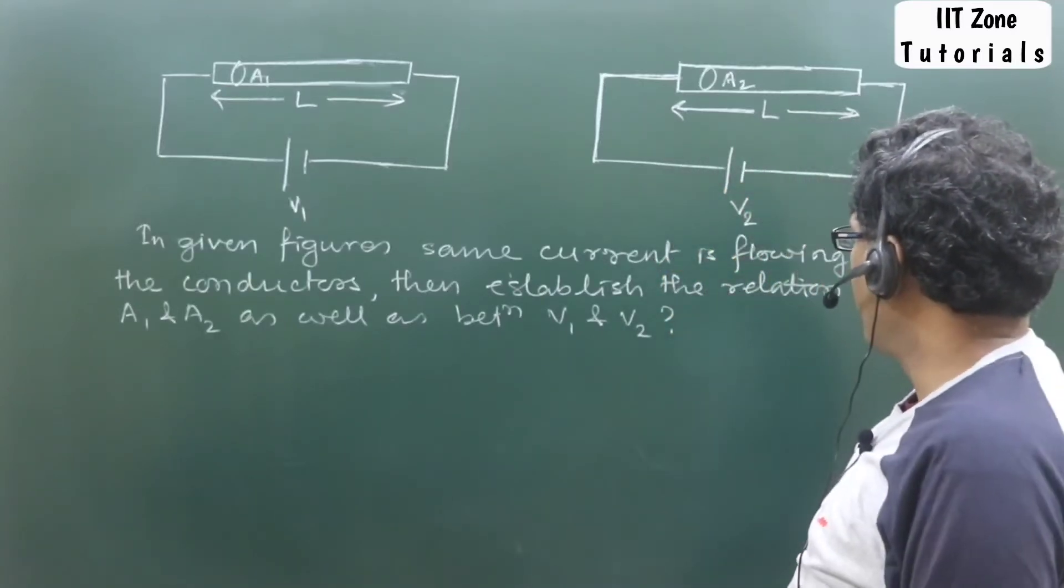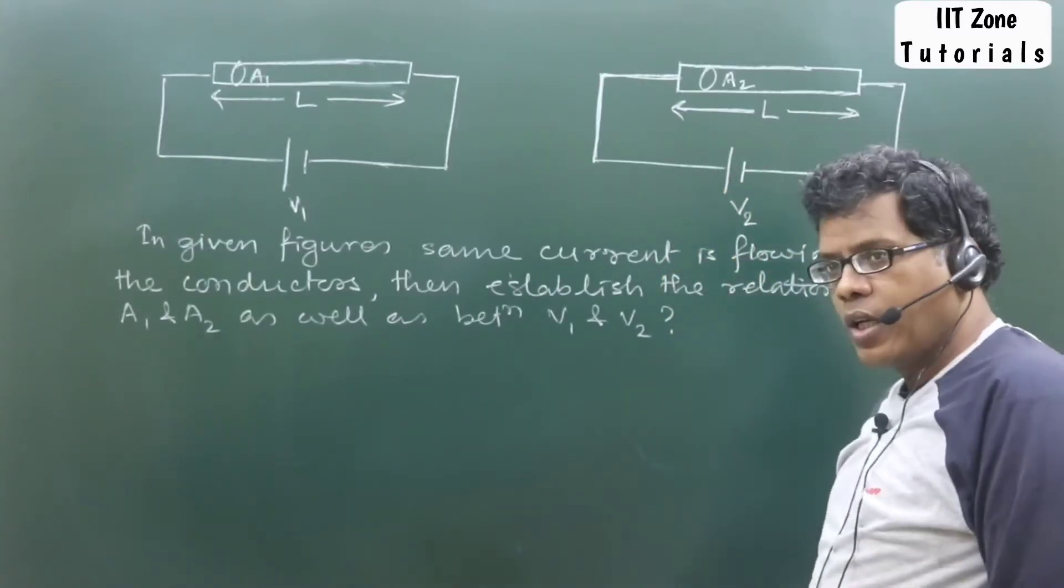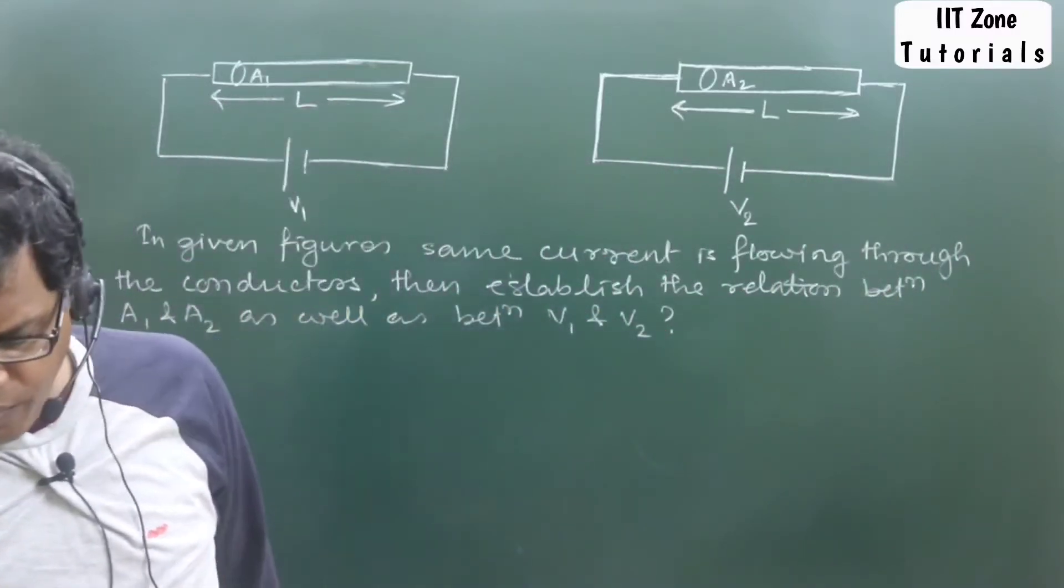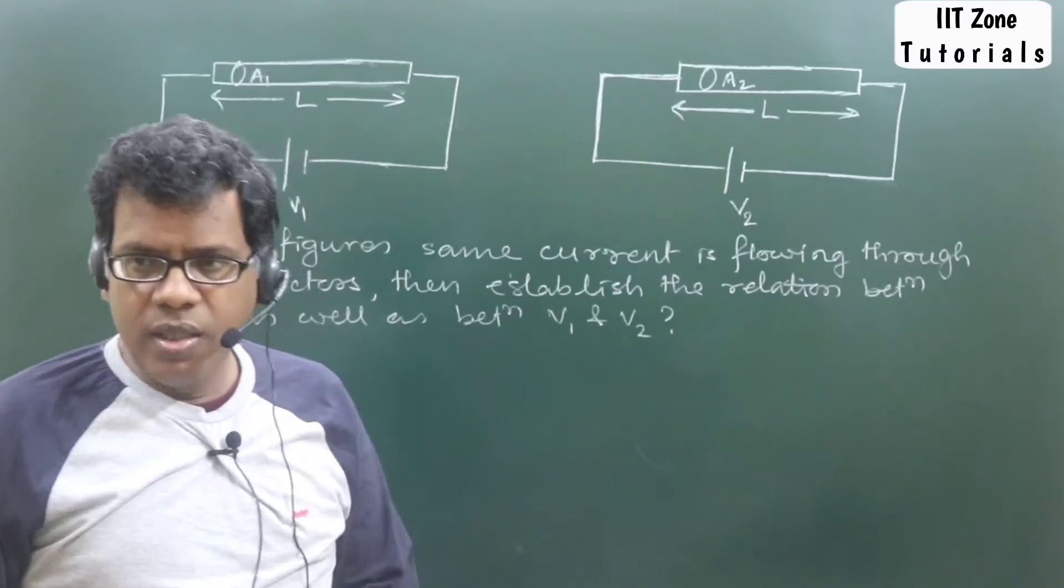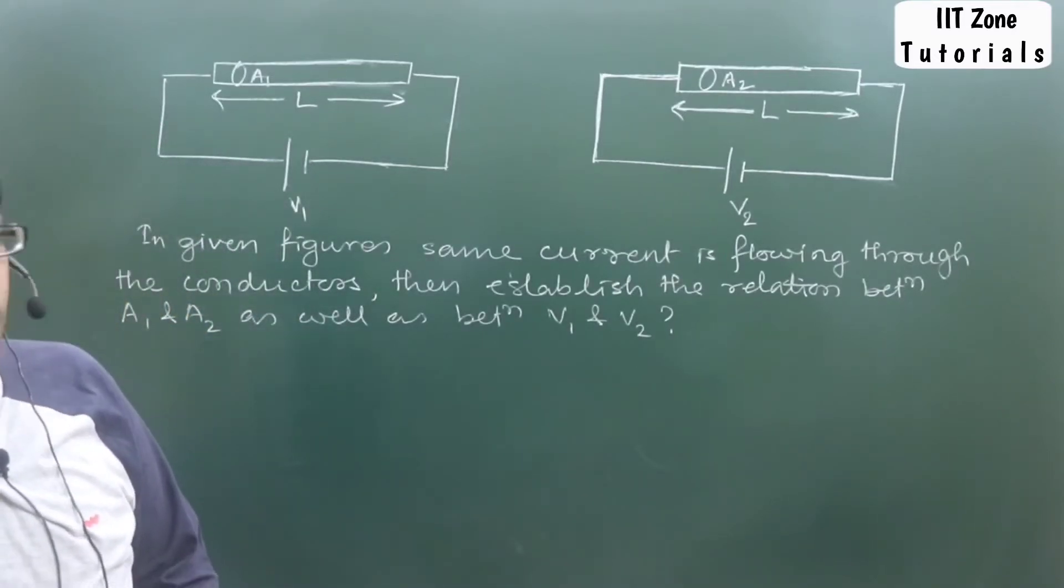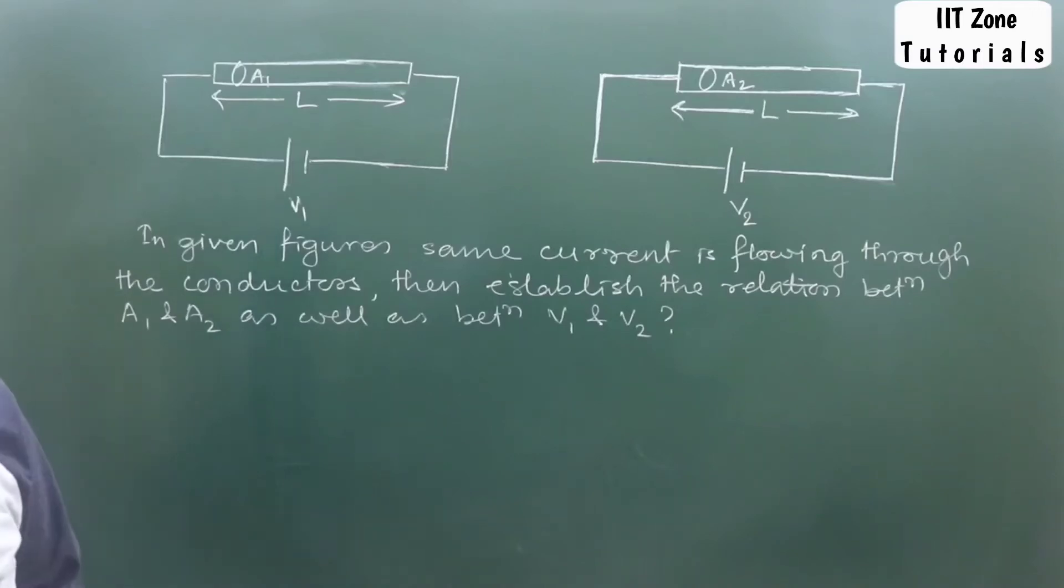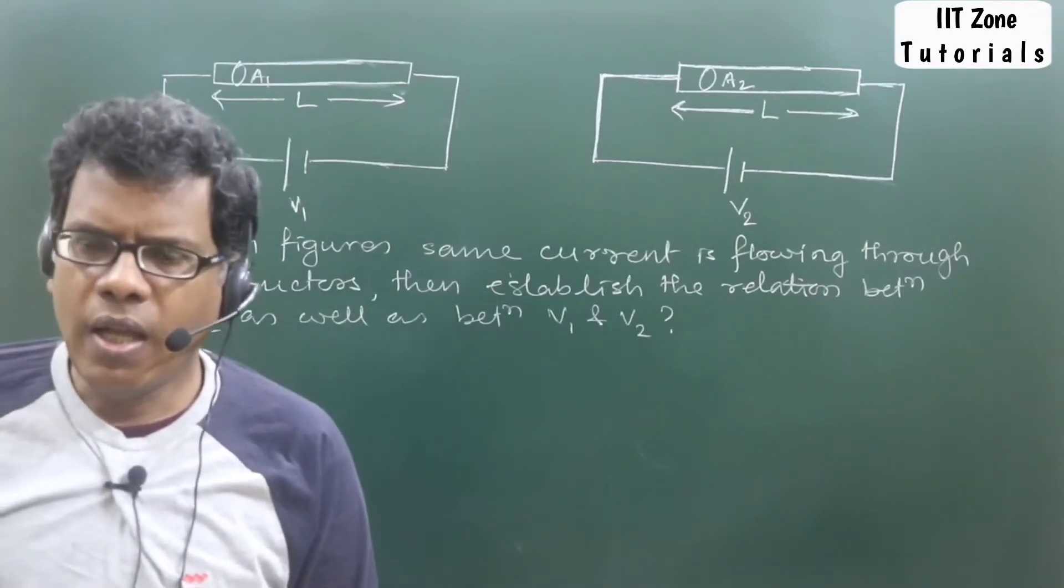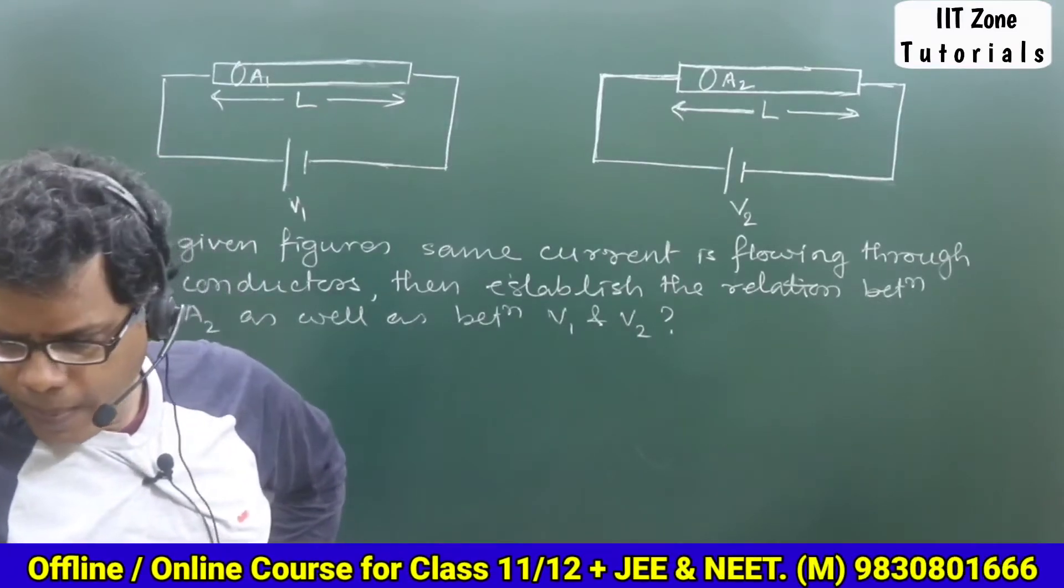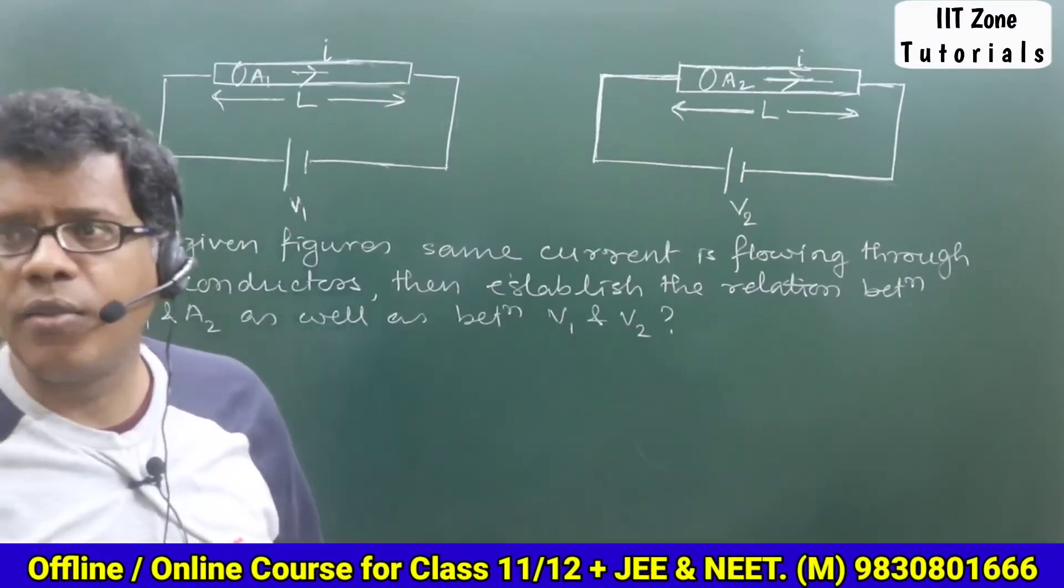If the same value of current is flowing through both the conductors, then what will be the relation between A1 and A2, and that between V1 and V2?